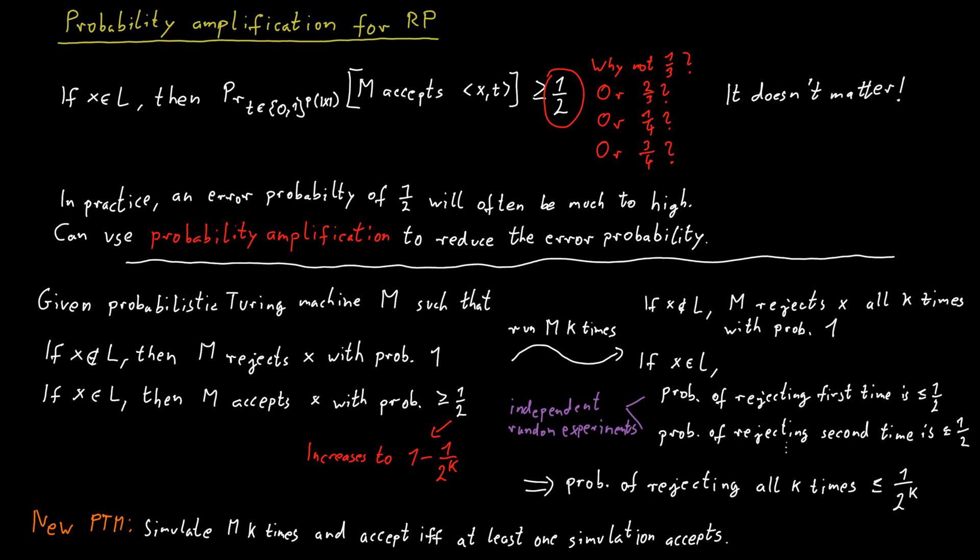While the probability that you reject a word that is not in the language remains equal to one. So we reduce the error greatly and we can choose k to be quite large. We just have to be careful that the machine we get is still running in polynomial time. So k needs to be polynomial in the size of the input. But as long as that is the case, we can run the machine many, many times and reduce the error greatly because the error probability really decreases exponentially as we increase k.